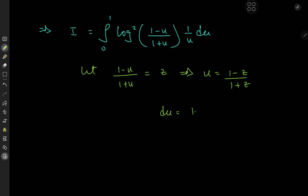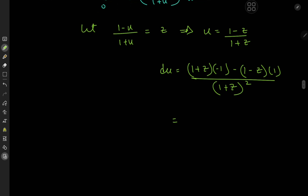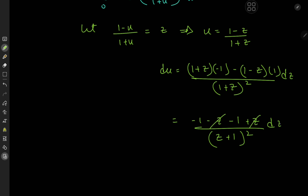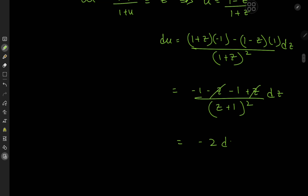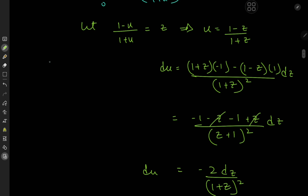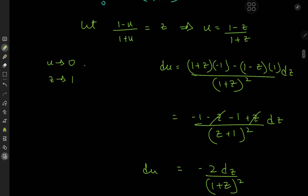Differentiating u = (1-z)/(1+z), we get du = [-(1+z) - (1-z)] / (1+z)² dz = -2 dz/(1+z)². That's the new differential element. For the limits: as u tends to 0, z approaches 1, and as u approaches 1, z tends to 0 — so the limits switch.